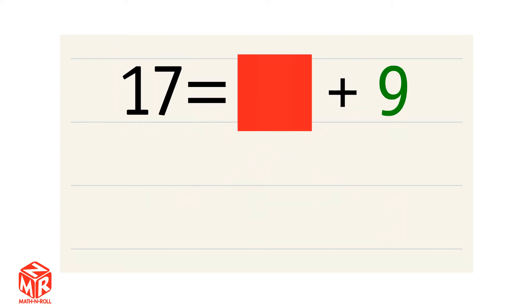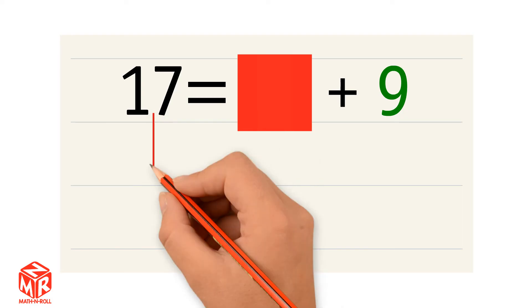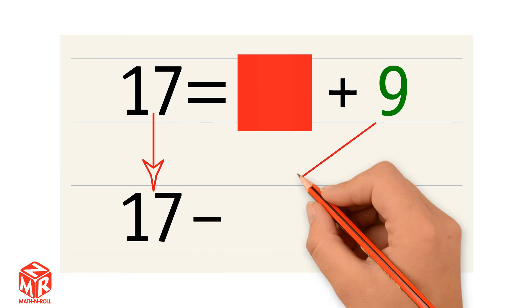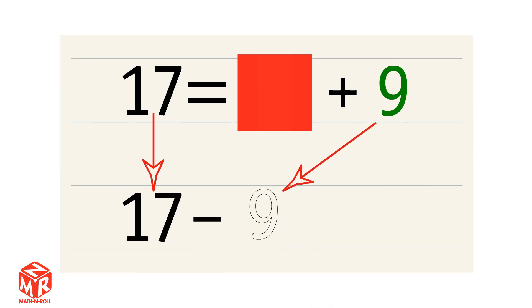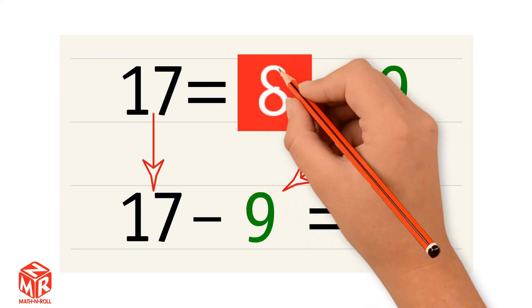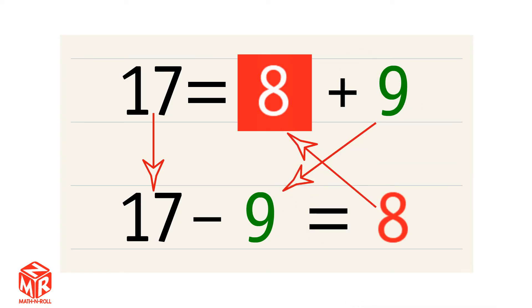Let's try another one. 17 equals an unknown number plus 9. To find the unknown number, we take the whole, 17, and subtract the part that we know, 9. 17 minus 9 equals 8. So 8 is our unknown number. 17 equals 8 plus 9 and 17 minus 9 equals 8 are related facts. So to find the unknown number, you take the whole and subtract the part that you know.